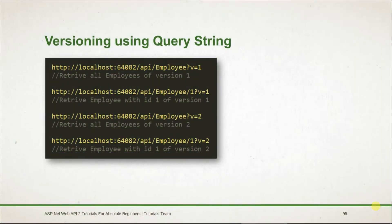Instead of passing the version along with the URI, we pass it in the query string like API/employee?v=1, which will retrieve the list of all employees of version 1. For retrieving version 2, we need to use the query string v=2.